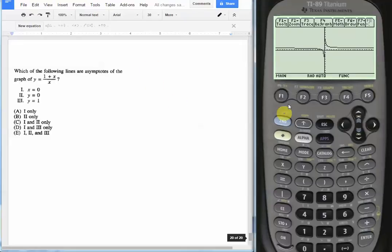If we hit F3 for our trace button, we can see if we start here. As we go more and more to the left, the y value is going to approach one but it's never quite going to hit one.